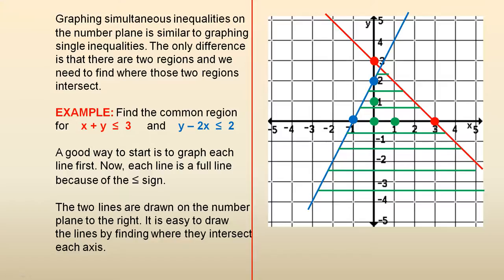Graphing simultaneous inequalities on the number plane is similar to graphing single inequalities. The only difference is that there are two regions and we need to find where those two regions intersect. So this is the key word here, the intersection of the two regions.